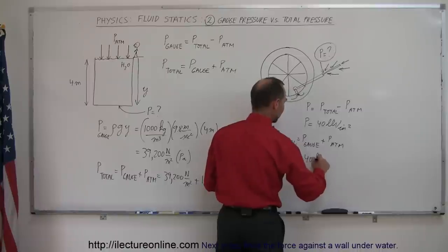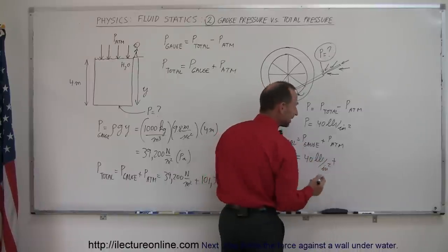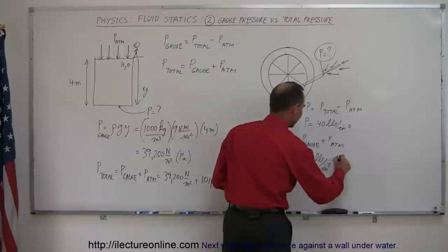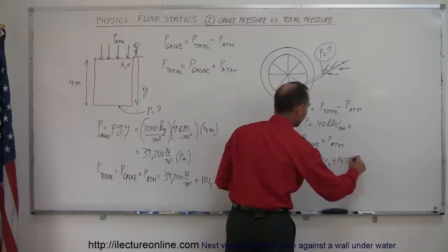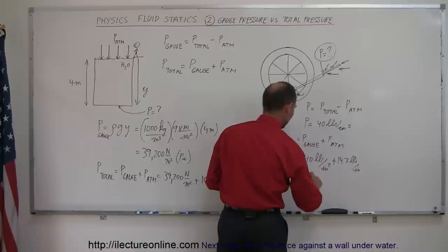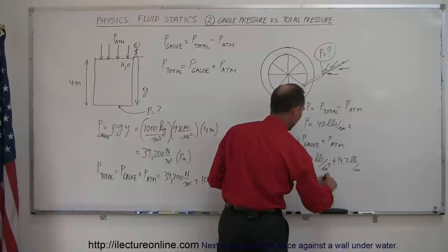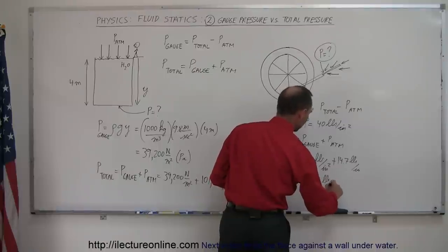And so, that would be equal to 40 pounds per square inch plus the atmospheric pressure, which is about 14.7 pounds per square inch. So, the total pressure in the tire would be 54.7 pounds per square inch.